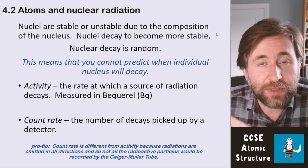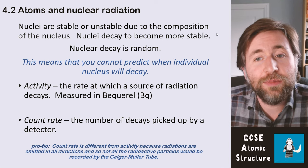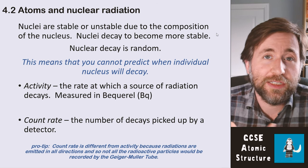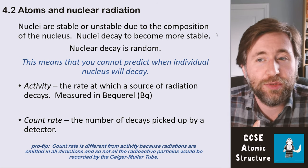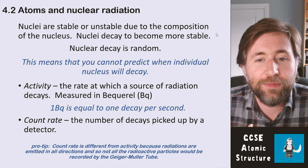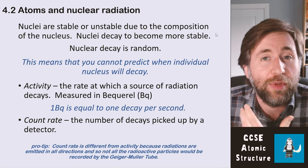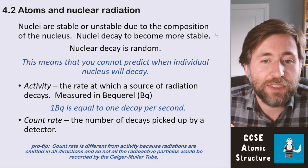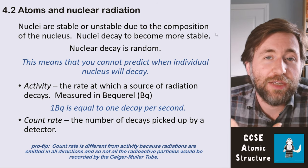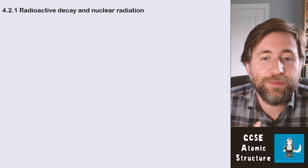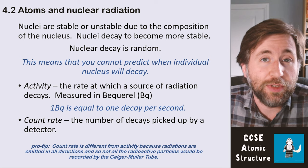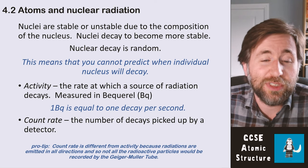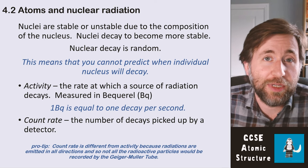Nuclear decay being random means you can't predict when an individual nucleus will decay. Remember that one becquerel is equal to one decay per second. There are other units we could use, for example counts per minute for measuring count rate.